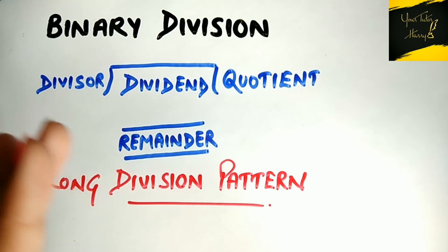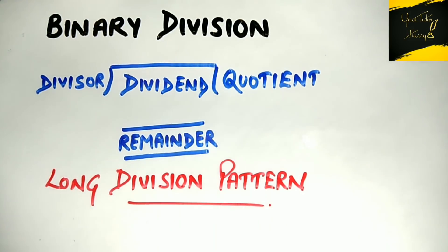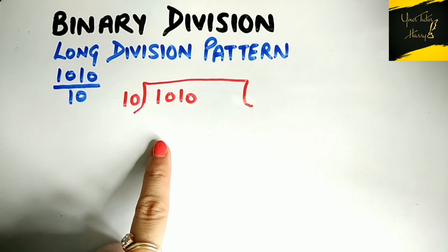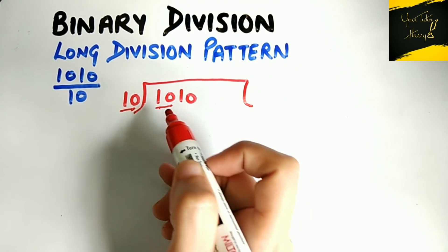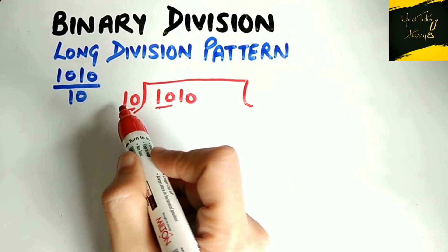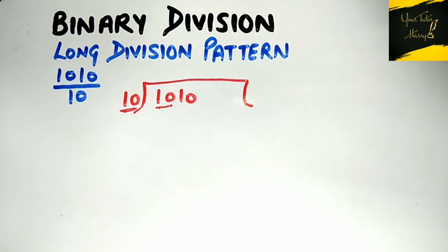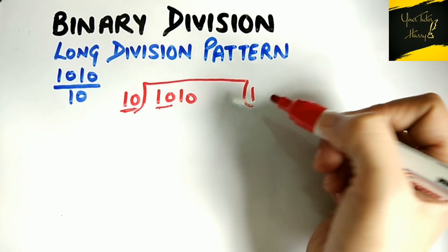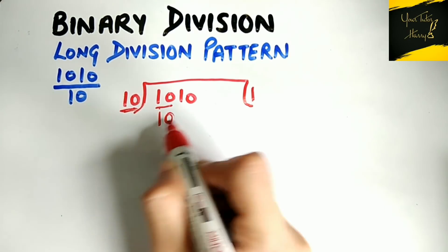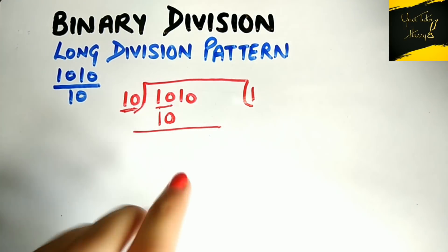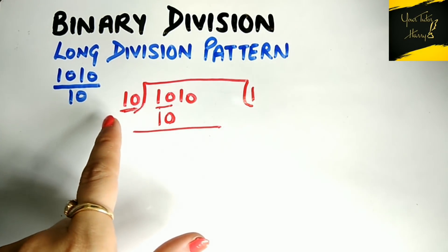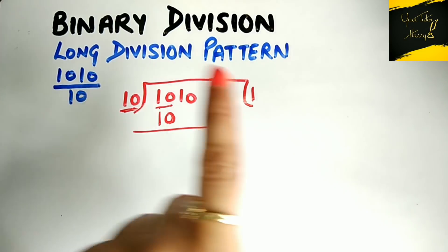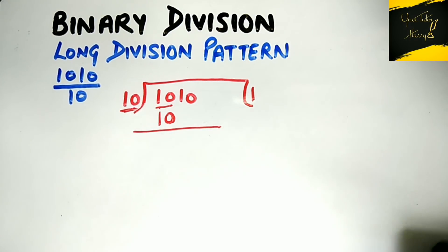Let's see how this works. Divide into the first two bits of your dividend with the divisor. Now check: is the dividend portion less than or equal to the divisor bits? You can see the 2-bit value '10' in the dividend is equivalent to the divisor '10', so we place the quotient here as 1 and bring '10' down. If the bits in the dividend are not less than or equal to your divisor bits, you place the quotient as 0.